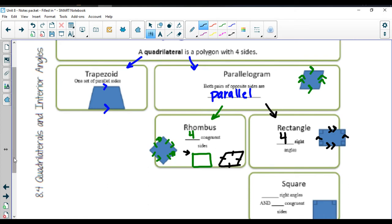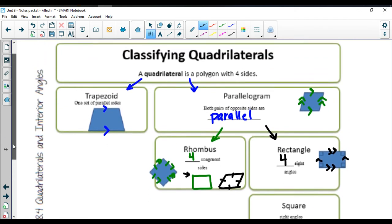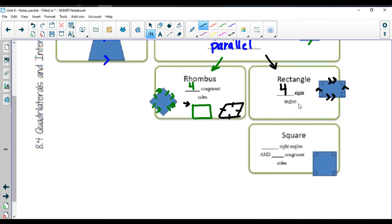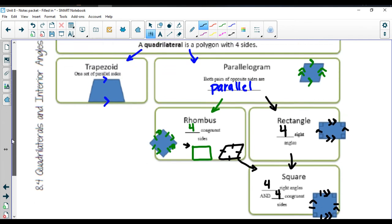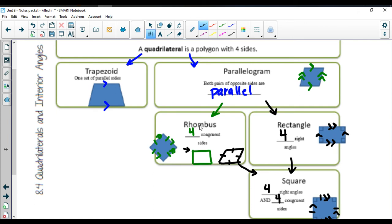Special rectangles are going to be called squares. A special rectangle that's a square kind of combines the idea of a rectangle and a rhombus. So you have four right angles and four congruent sides. So all those sides are equal in length.